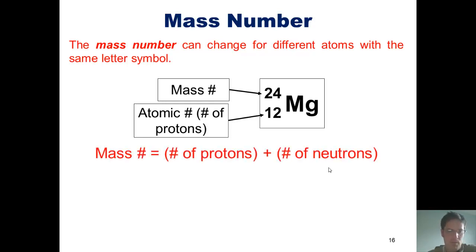Here's the formula for mass number. The mass number of any atom is equal to the number of its protons plus the number of its neutrons.